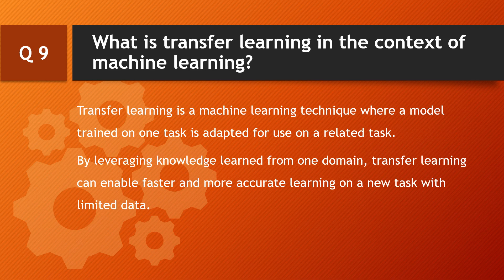Question: what is transfer learning in the context of machine learning? Transfer learning is a machine learning technique where a model trained on one task is adapted for use on a related task. By leveraging knowledge learned from one domain, transfer learning can enable faster and more accurate learning on a new task with limited data.